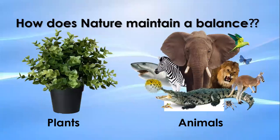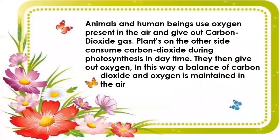How does nature maintain a balance? Animals and human beings use oxygen present in the air and give out carbon dioxide gas. Plants, on the other side, consume carbon dioxide during photosynthesis in daytime. They then give out oxygen. In this way, a balance of carbon dioxide and oxygen is maintained in the air.